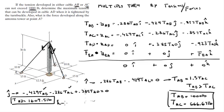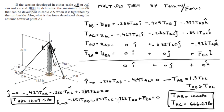From the k-equation: −0.857·T_AB − 0.857·T_AC − 0.923·T_AD + F_EA = 0. We already have T_AB, T_AC, and T_AD, so we solve for F_EA and get F_EA = 2913.9 pounds — the force developed in the tower.